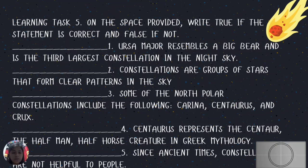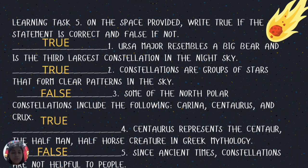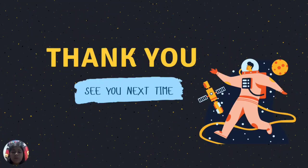The correct answers are: number 1 — True; number 2 — True; number 3 — False; number 4 — True; number 5 — False. That ends our lesson for Science 5, Quarter 4, Weeks 7 to 8. Thanks for listening and happy learning — bye bye!